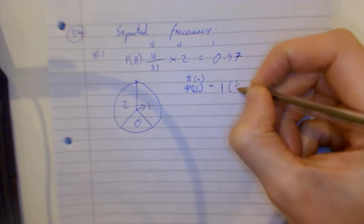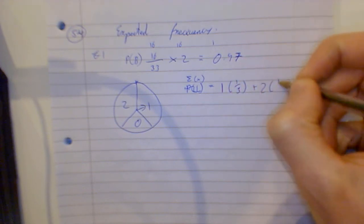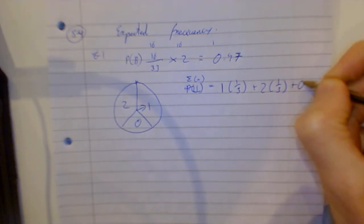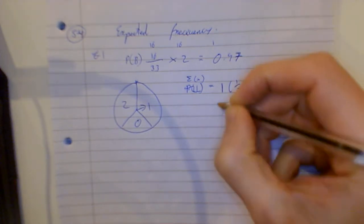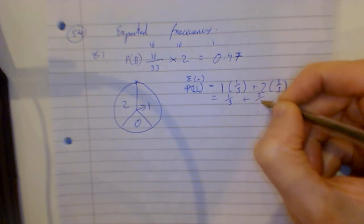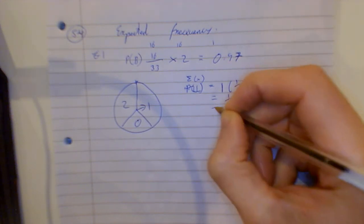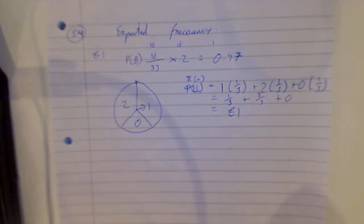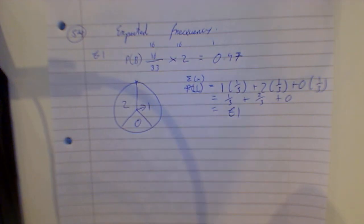It's going to be... that's one euro, you'd guess. That's one third, that would be two times one third, and that'd be zero times one third. This is how much the game should cost: that's one third of a euro, that's two thirds of a euro, and that's zero. So the game should cost one euro. Really simple.